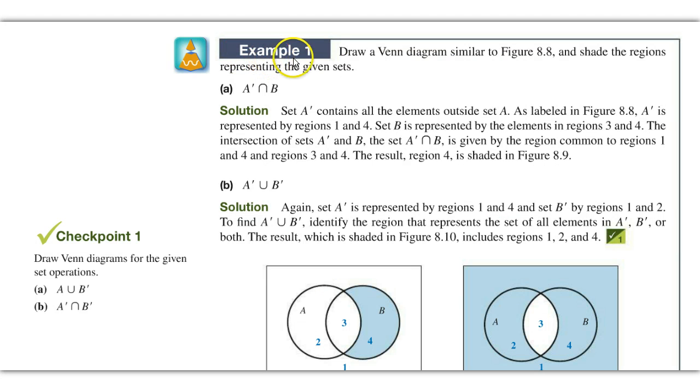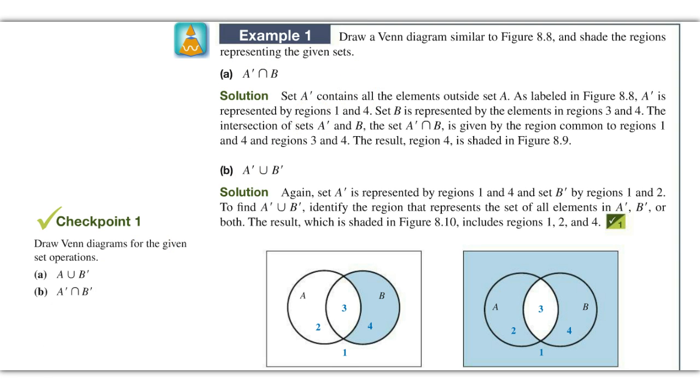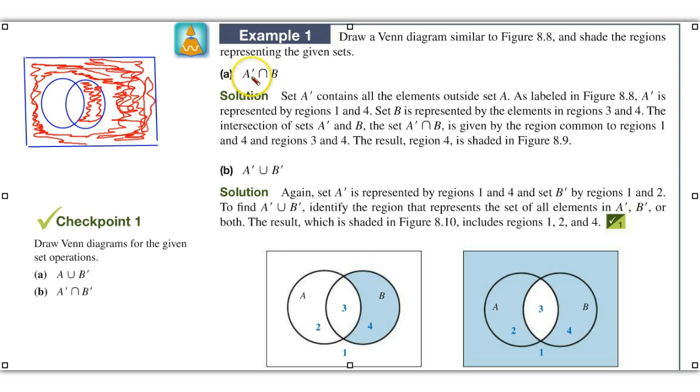As we look at example 1 now, they want us to draw a Venn diagram similar to 8.8, so it'll look somewhat like this here. We can raise it up a little bit more, and then shade the regions to represent the given set. That is, A complement intersecting with B.